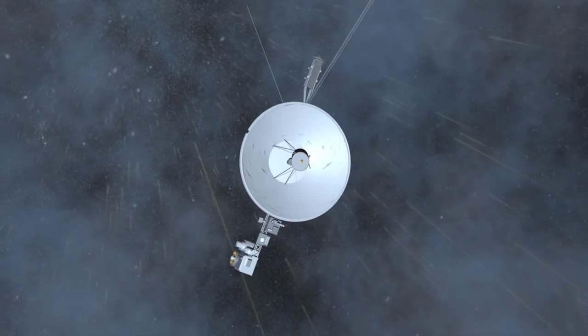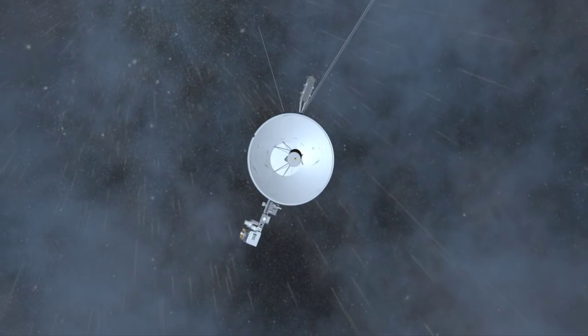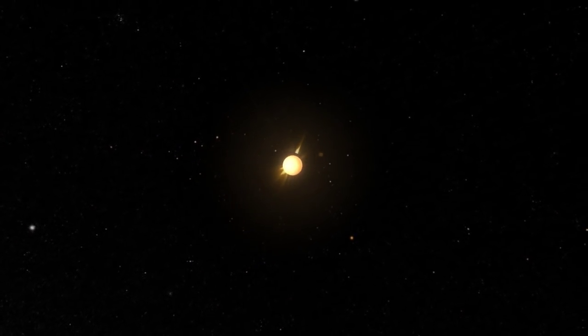This boundary is marked by the outer reaches of the Sun's magnetic field and solar wind, which form an enormous expanse called the heliosphere.